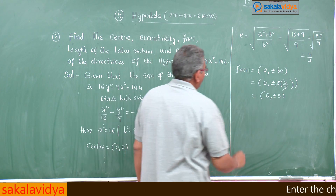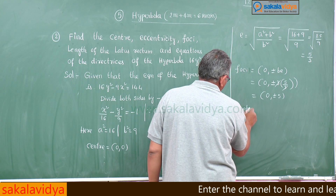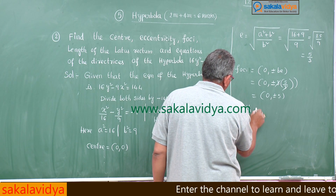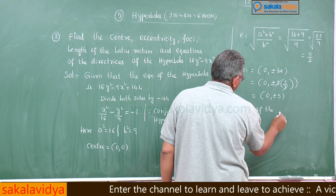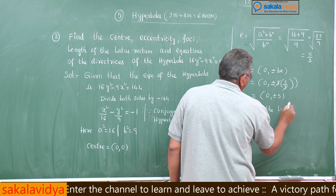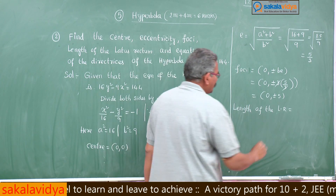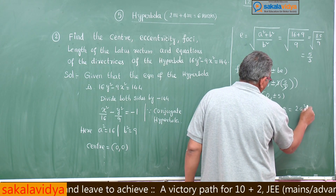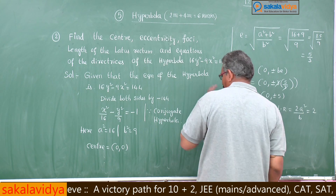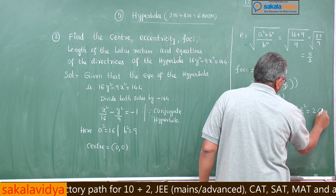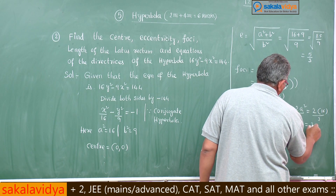Next, the length of the latus rectum. In general for a standard hyperbola it is 2b² by a, but in this conjugate case it is 2a² by b. So that is 2 × 16 / 3 = 32/3.